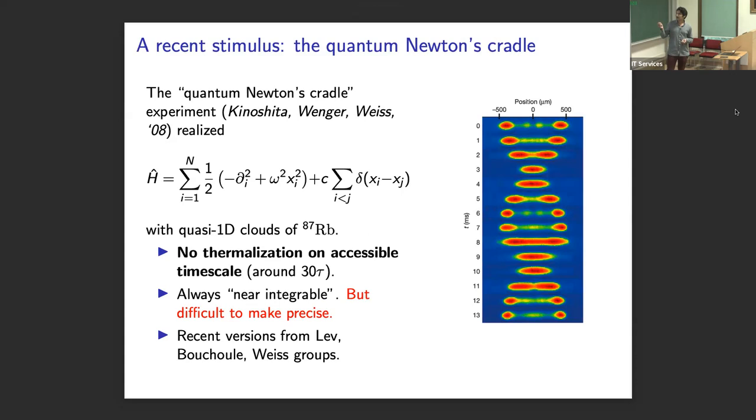So a recent stimulus for such questions, a more recent stimulus is this quantum Newton's cradle experiment. So now we are actually genuinely in a finite temperature regime. We're putting an extensive energy into the system and allowing these two clouds of rubidium atoms to bounce off each other. It's quite an unusual Hamiltonian because it's torn between two integrable points. On the one hand, you have the harmonic trap, which is integrable. On the other, you have this Lieb-Liniger gas that we just heard about from Benjamin, which is also integrable.